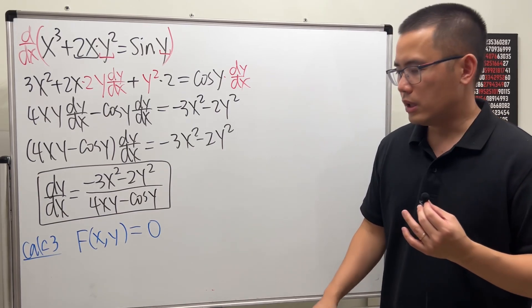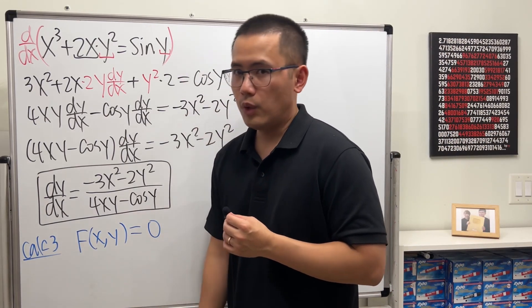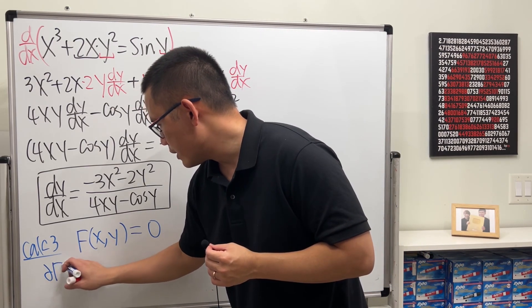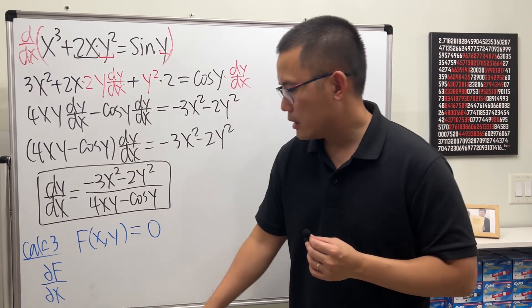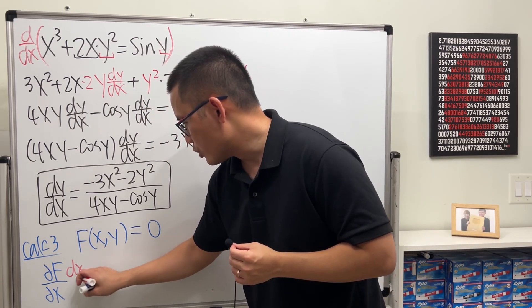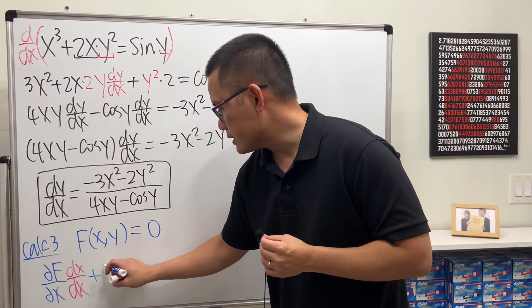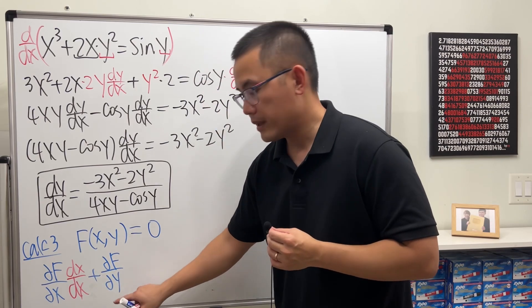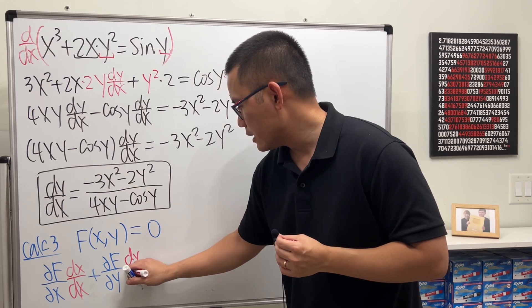So what we want to do is look at this and take the partial of this function with respect to x. And then we will multiply by the derivative of x with respect to x. And then we combine that with the partial of f with respect to y. And then here we will have dy/dx.